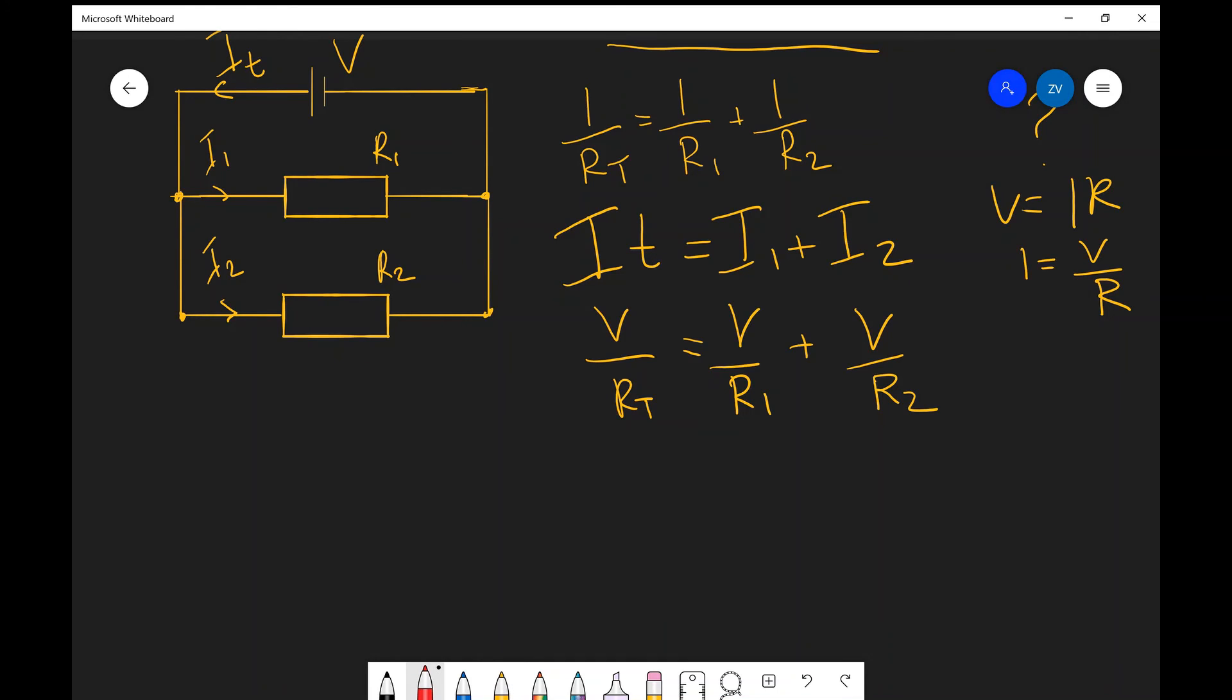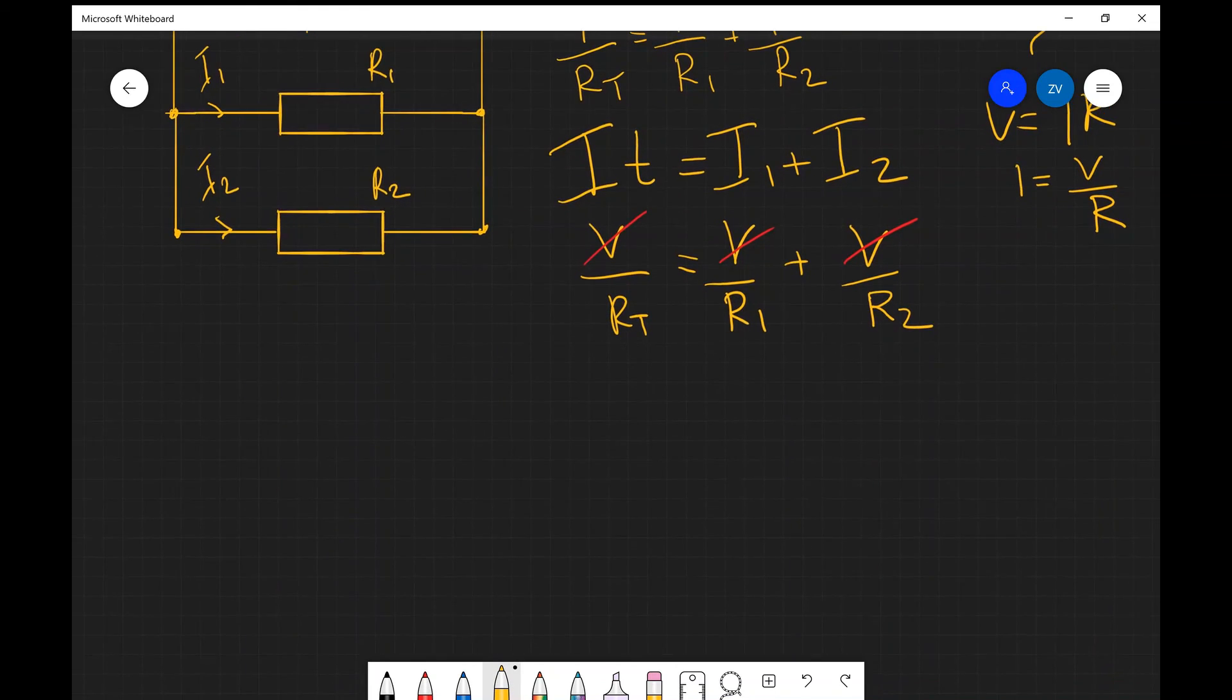And what we're left with is the original expression that we're trying to prove. So it follows that 1 over R total is going to equal 1 over R1 plus 1 over R2.